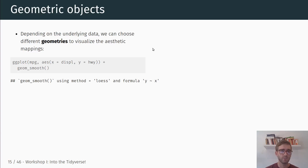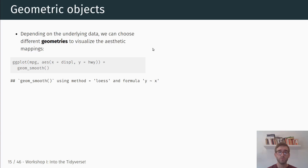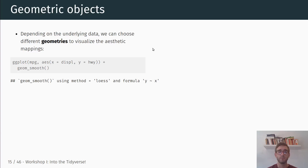Depending on the underlying data, we can also choose different geometries to visualize the aesthetic mappings. Up to now we only used geom_point for basic scatterplots, but we can also use other geometries. One example is geom_smooth, which fits — in our case — a loess, so a non-parametric fit to the data. There are other fits available in geom_smooth; for example, we can include a linear regression line, but here we're just going to look at a loess fit.